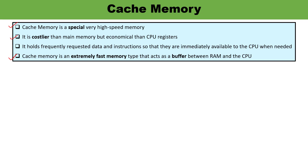Why is cache memory required? Whenever you are executing some programs, some of the data or instructions may be required frequently — those particular data and instructions may be required a number of times. So those instructions and data can be stored in a memory which is immediately available to the CPU whenever there is a requirement. Cache memory stores the frequently requested data.